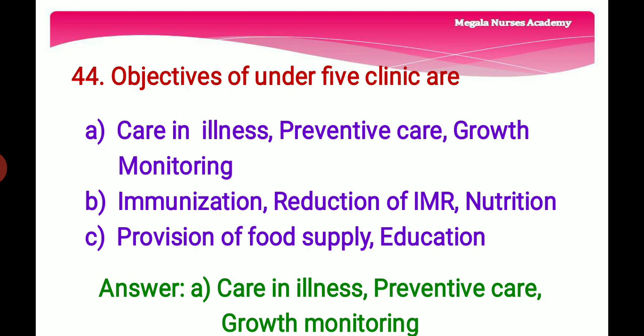Forty-fourth question: Objectives of under-5 clinics — Option A: Care in illness, preventive care, and growth monitoring. Option B: Immunization, reduction of infant mortality rate, and nutrition. Option C: Provision of food supply and education. The right answer is Option A: care in illness, preventive care, and growth monitoring.